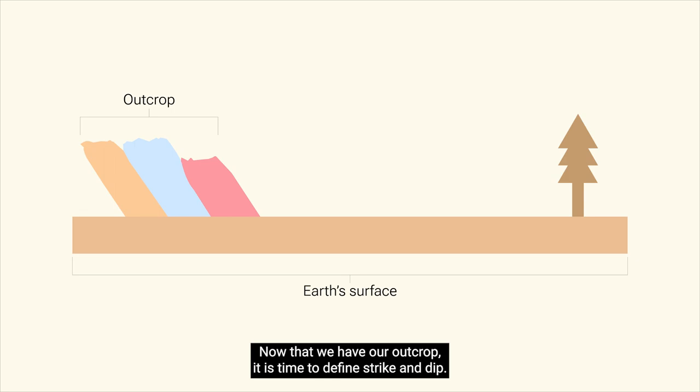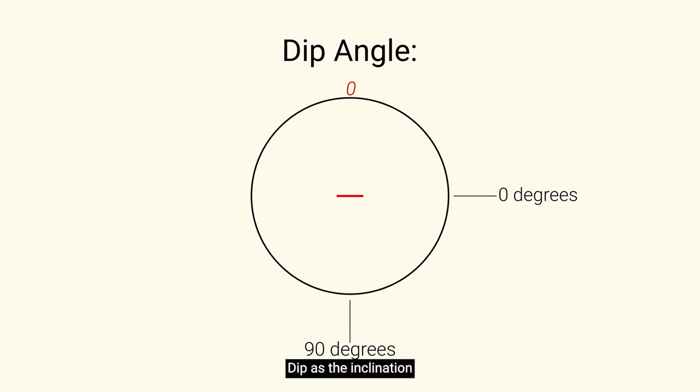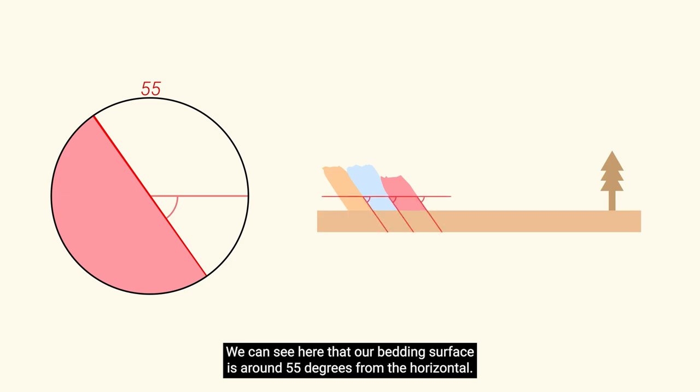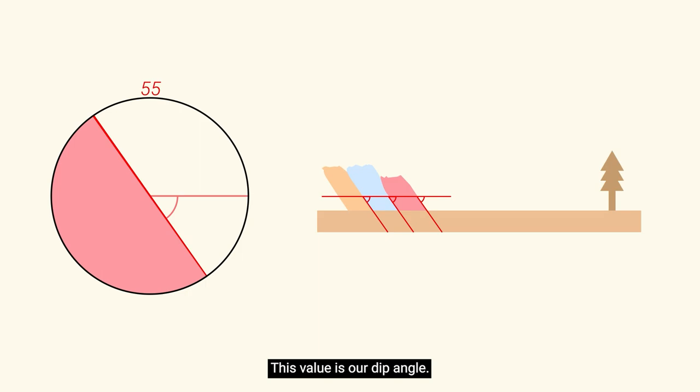Now that we have our outcrop, it is time to define strike and dip. Dip is the inclination or angle of the rock layers measured from horizontal. We can see here that our bedding surface is around 55 degrees from the horizontal. This value is our dip angle.